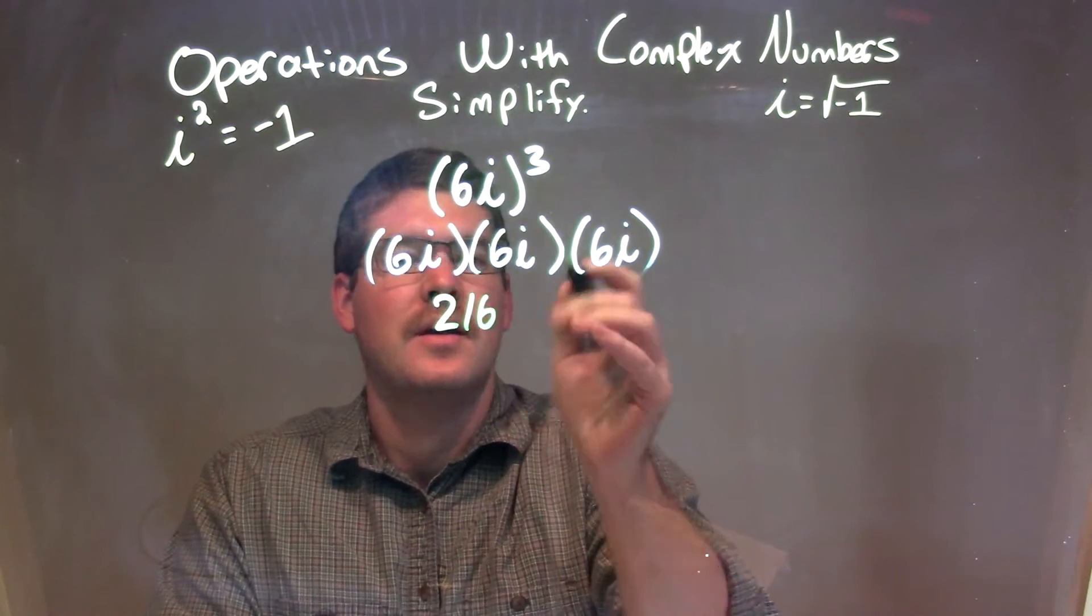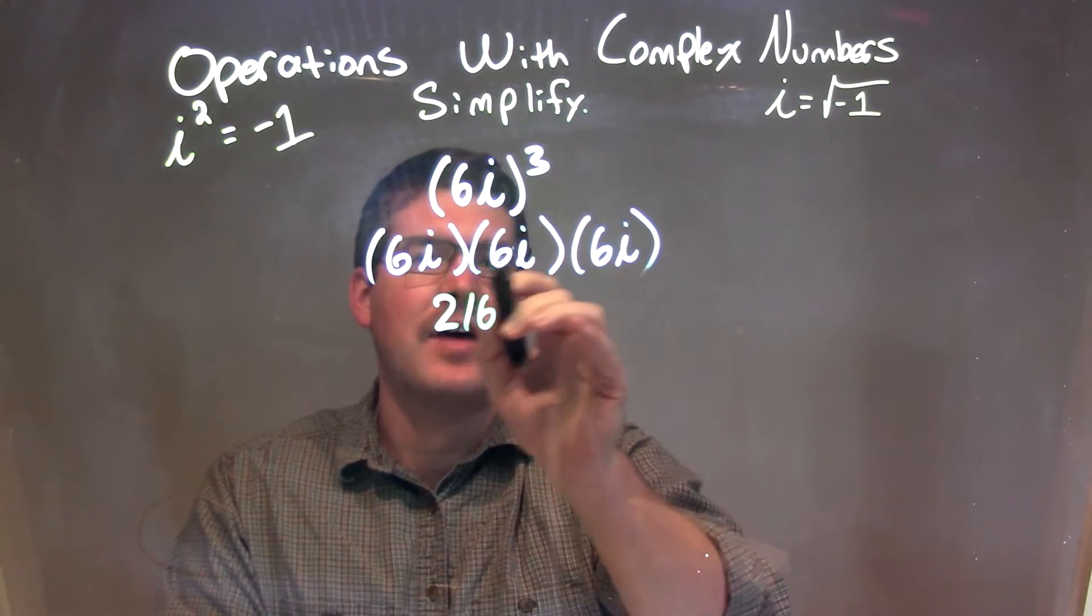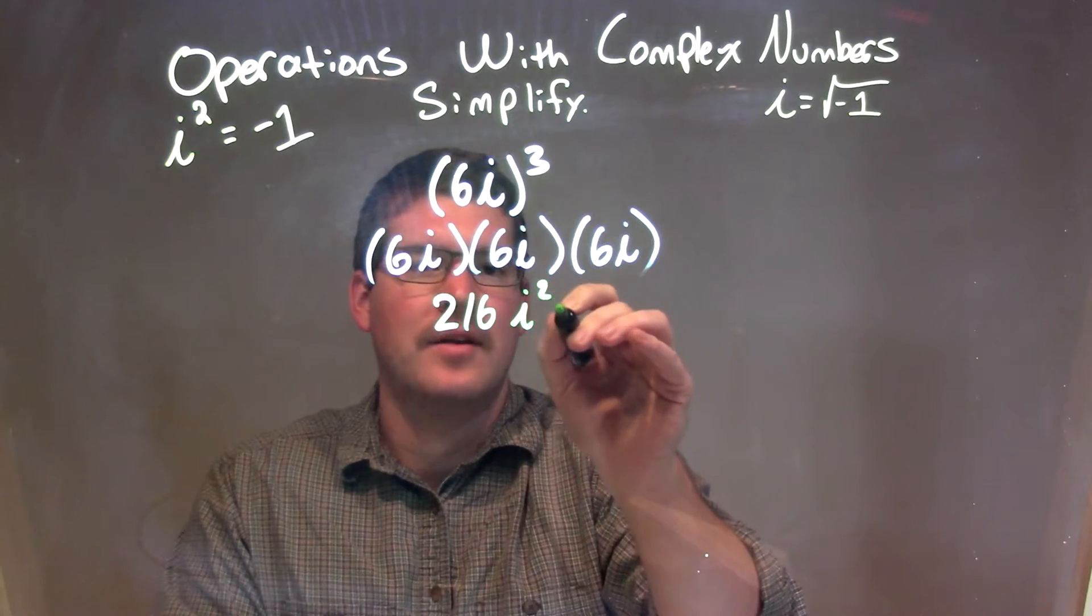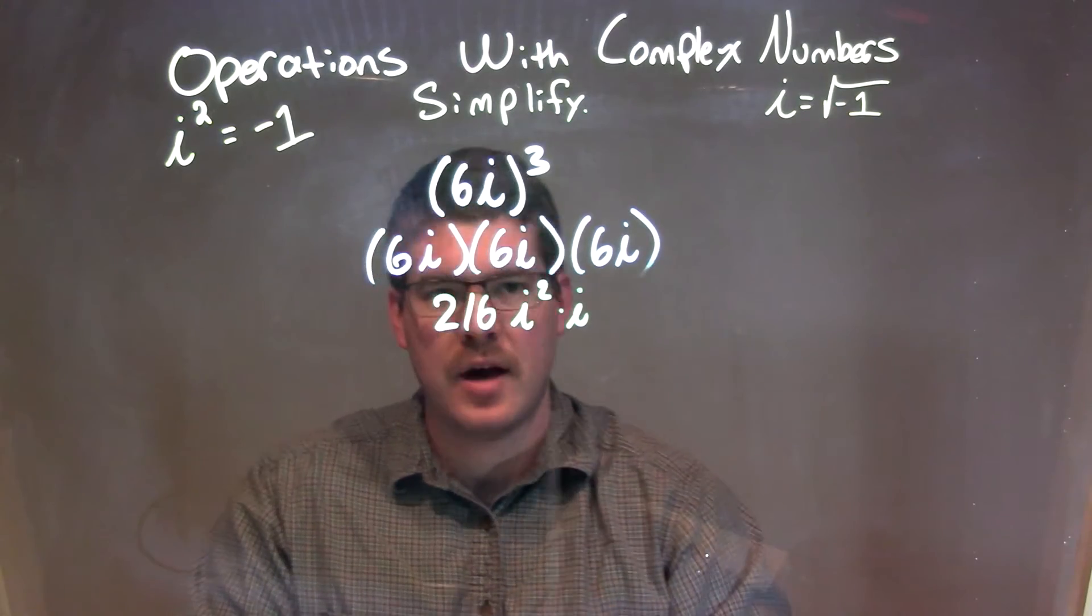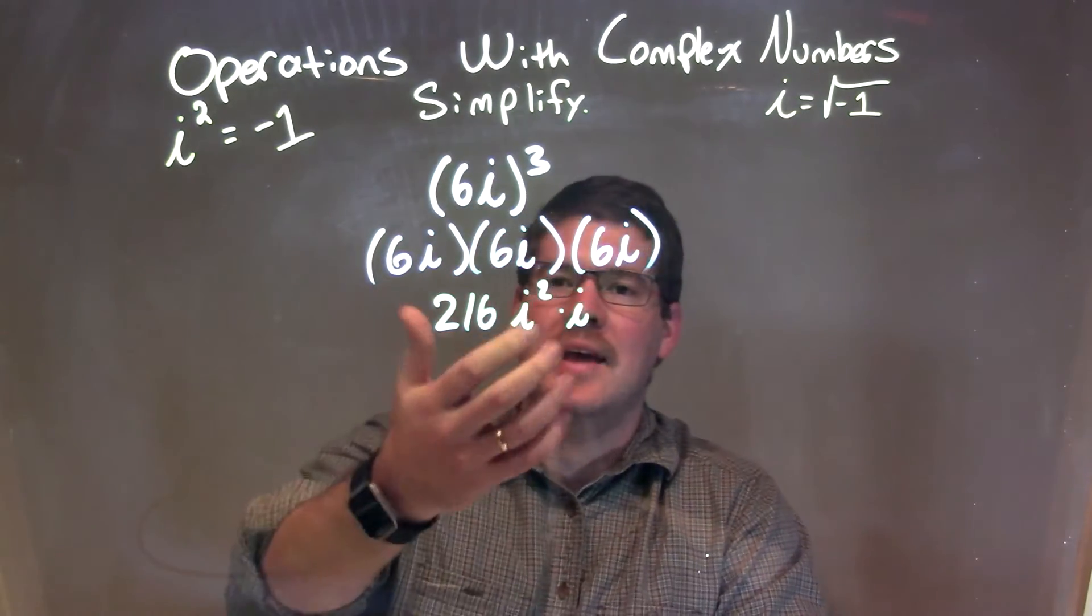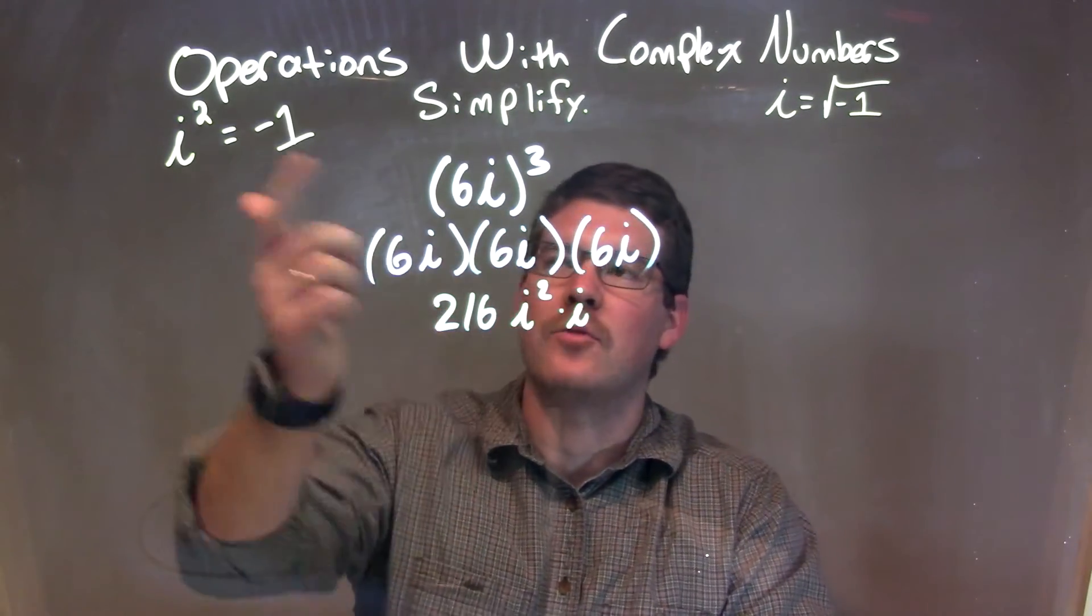So, 216 times, instead of i to the third, I'm going to write it as i squared times i. Same thing, right? i times i times i multiplied, i squared times i. And the reason why I separated the i squared is because we know i squared is negative 1.